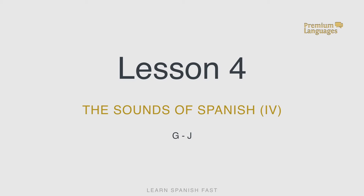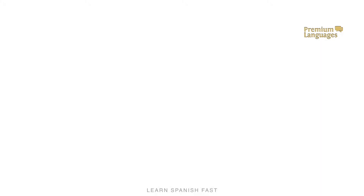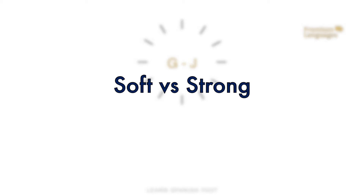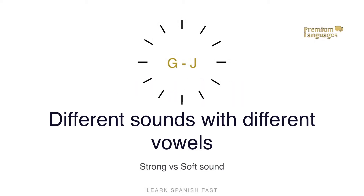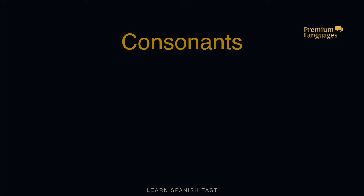Hola! In today's lesson we will continue with the sounds and the spelling of the Spanish language. We will specifically focus on two letters: G and J, and two different sounds. One we will call strong and the other one soft. The first one is G and the second one is Jota. G is G in Spanish and J is Jota.